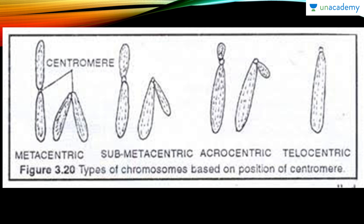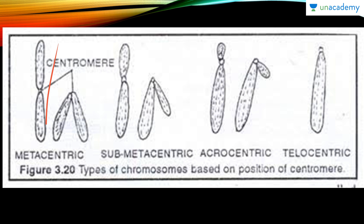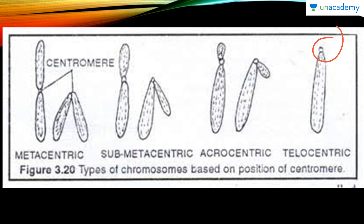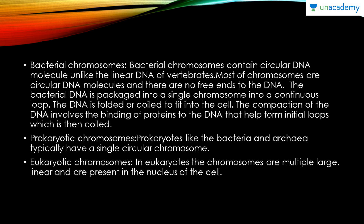Based on the position of the centromere, chromosomes are divided into four categories. Metacentric chromosomes have the centromere in the center with two roughly equal arms. Sub-metacentric chromosomes have the centromere shifted to one side, giving one long and one short arm. Acrocentric chromosomes have the centromere near one end, giving one very short and one very long arm. Telocentric chromosomes have the centromere at the very tip.